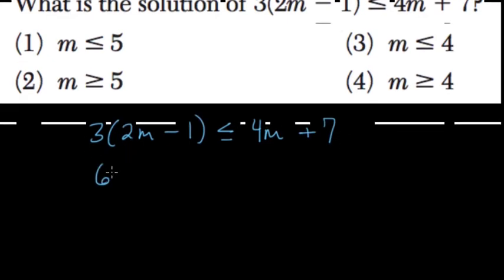So 3 times 2m is 6m minus 1 times 3 is minus 3, less than or equal to, it's still 4m plus 7.